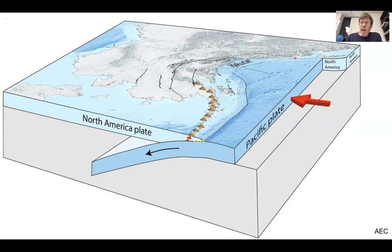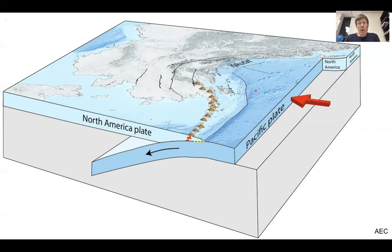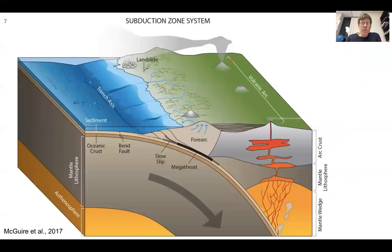You'd have right-lateral strike-slip motion along the Fairweather-Queen-Charlotte Fault, where North America is on one side and the Pacific plate on the other. So this is a great view to think about Alaska and the different plate boundaries, even the collision zone.